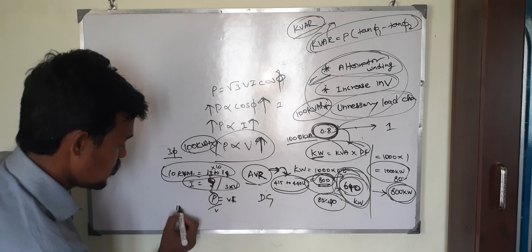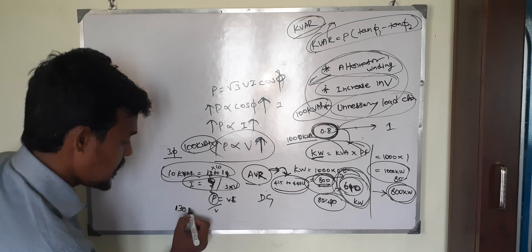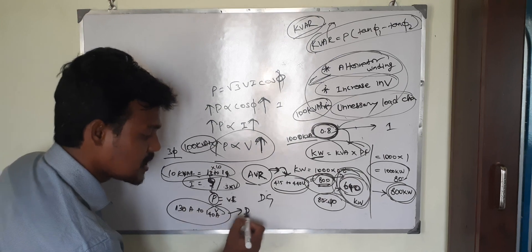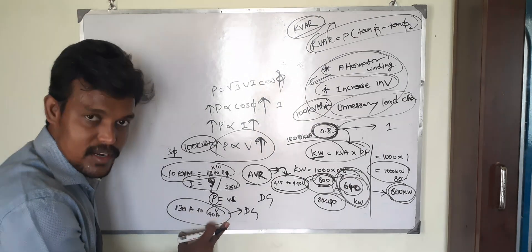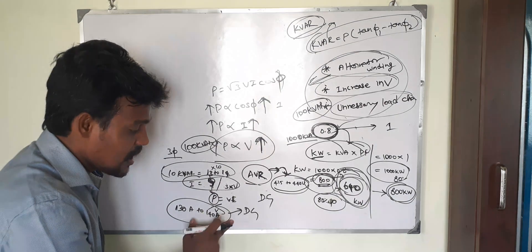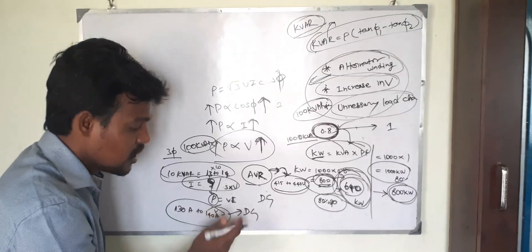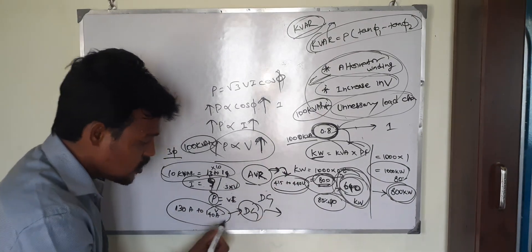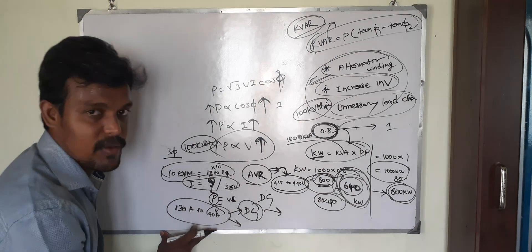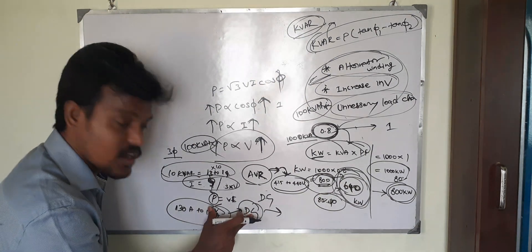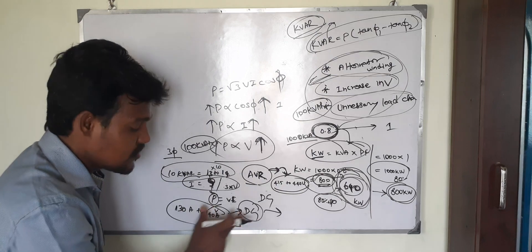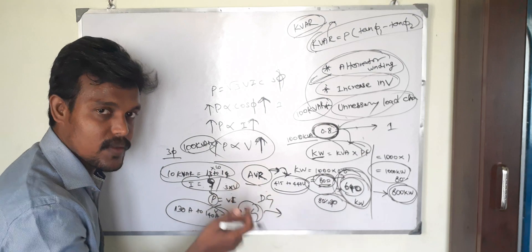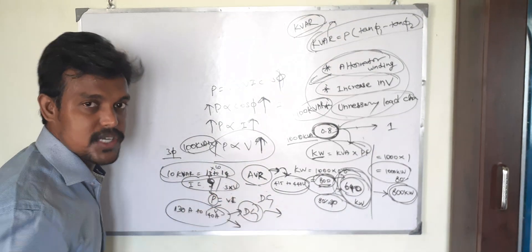This sudden load increase from the capacitor bank is not real power — it is reactive power. That is the problem. If you want to utilize your DG efficiently for your actual load, you have to cut out this reactive power. Otherwise the DG is unnecessarily running for reactive power and your diesel consumption will be higher compared to regular consumption.